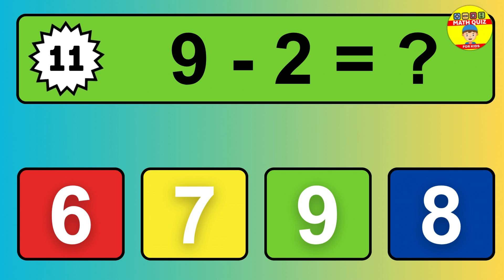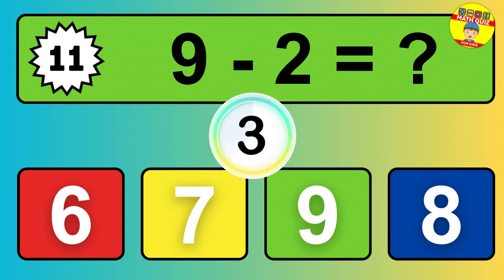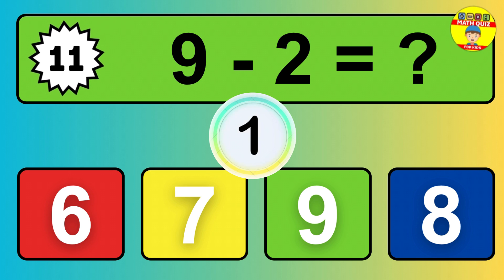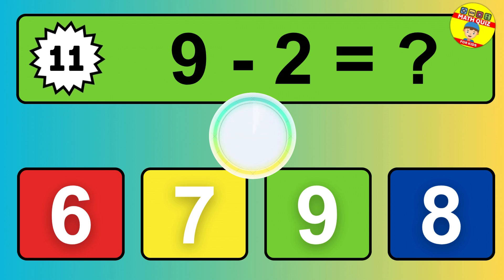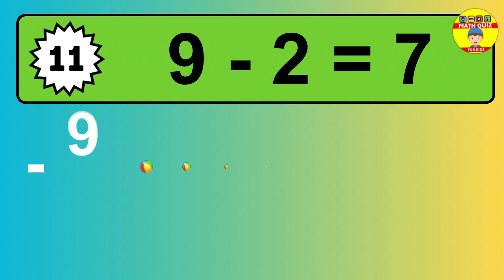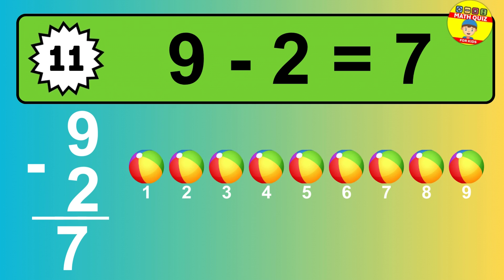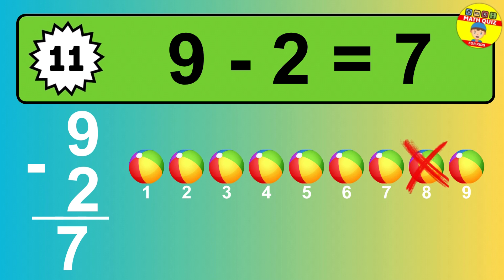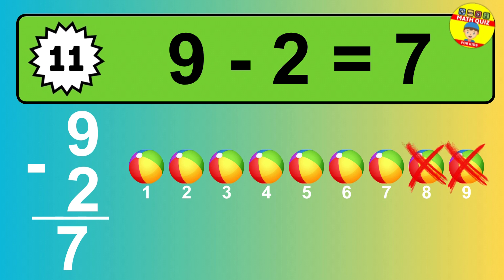Question eleven: nine minus two equals what? So the answer is, nine minus two is seven. Let's count it. One, two, three, four, five, six, seven.